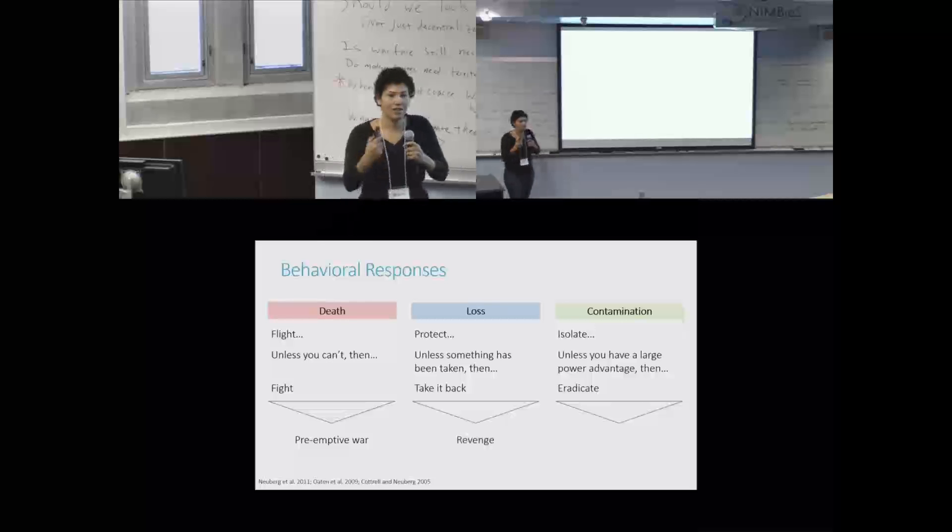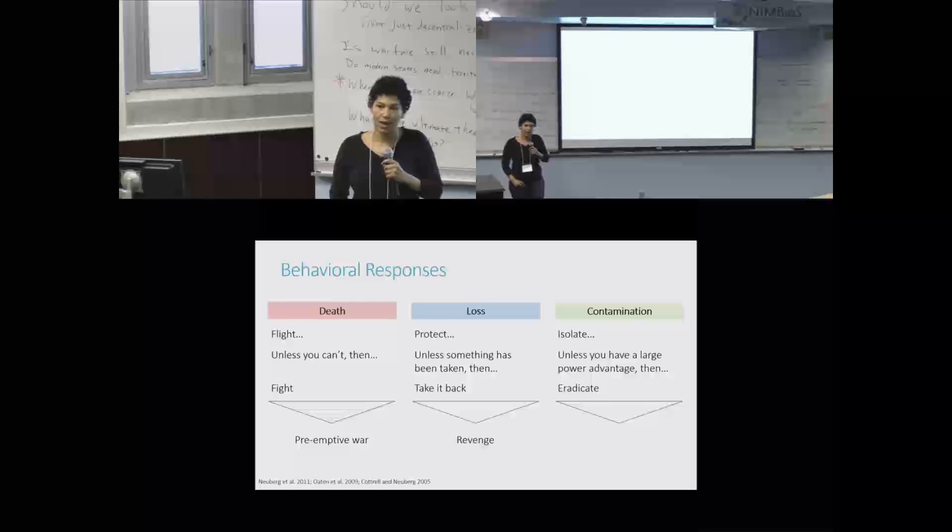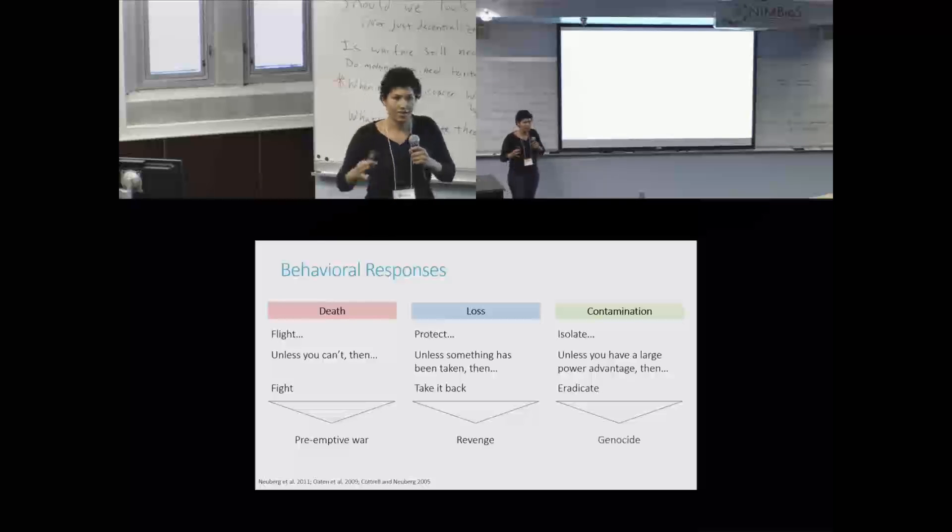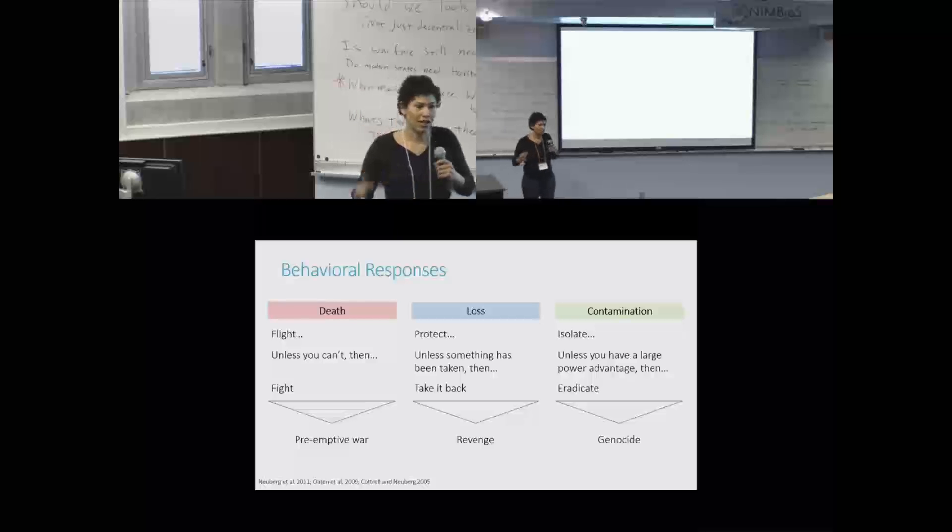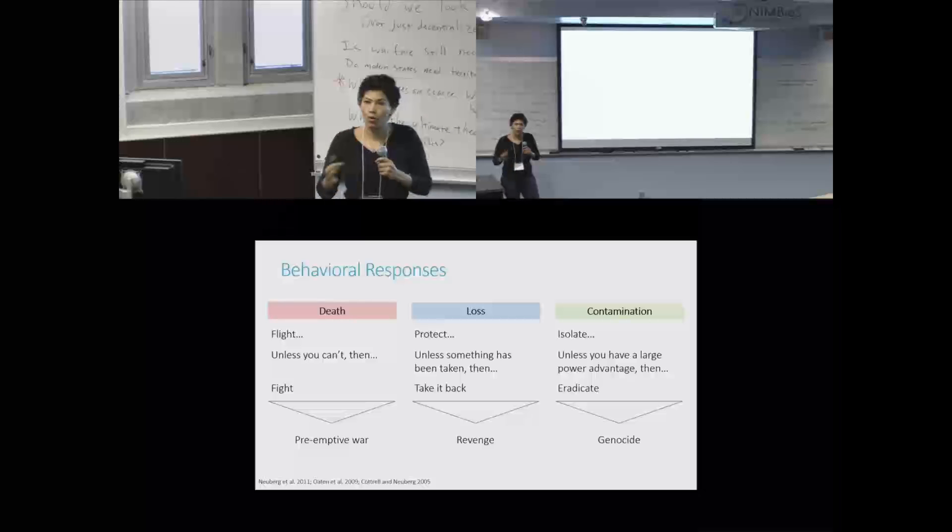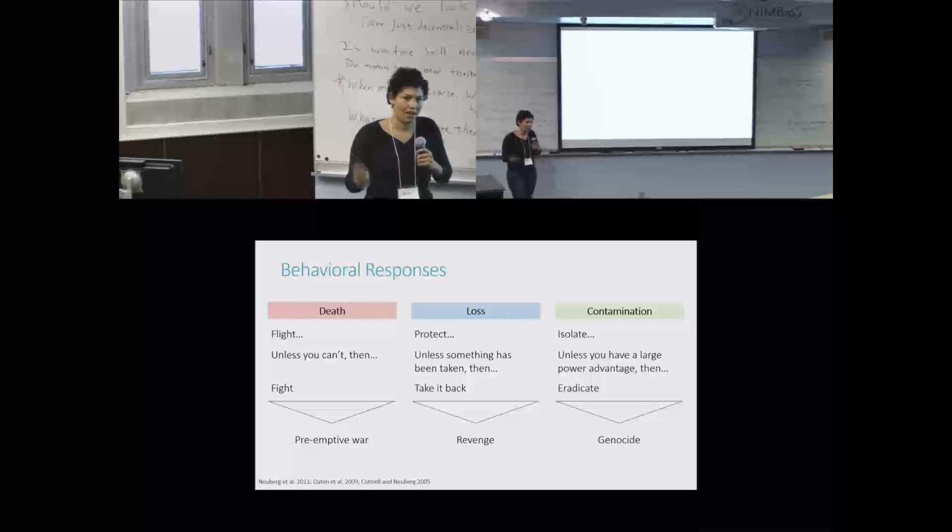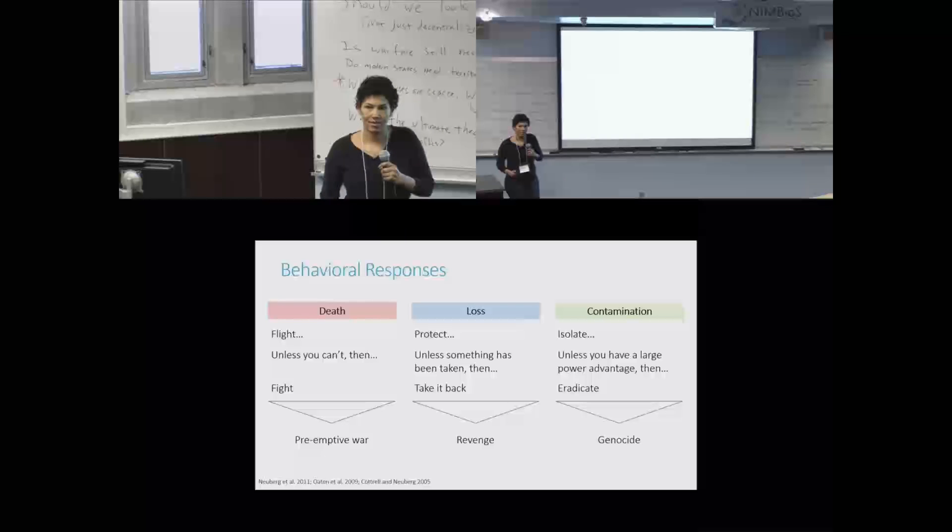If you perceive something to have been taken from you, whether in the recent past or the historical past, trying to take it back makes sense. If you think that some group among you is a social contaminant and they are threatening your way of life, your moral integrity, genocide and ethnic cleansing make sense. They're logically consistent within that heuristic.